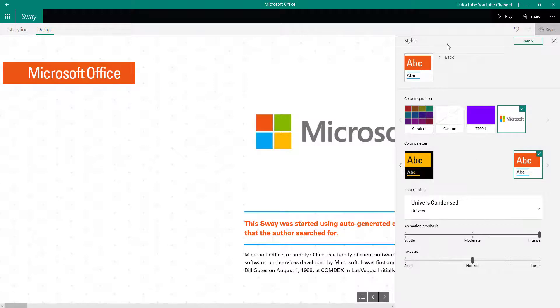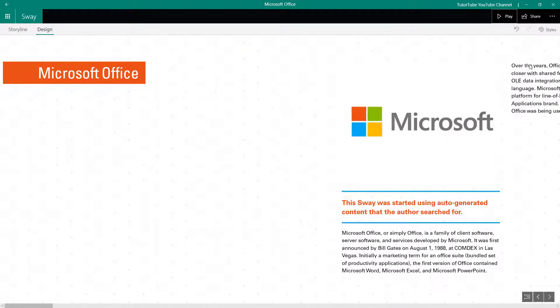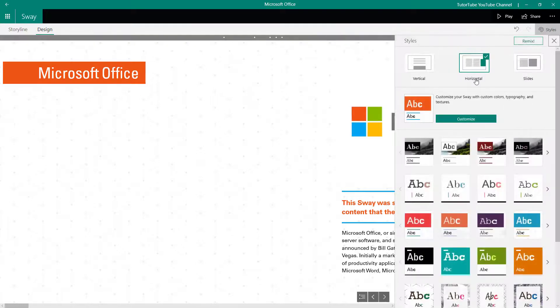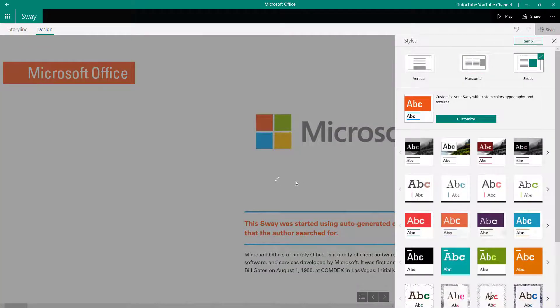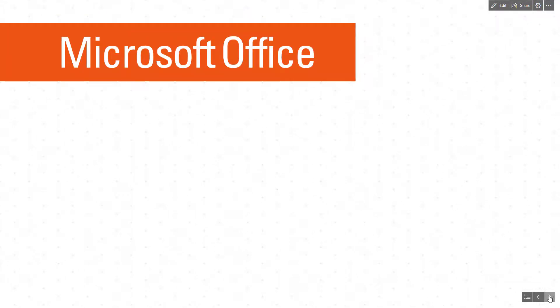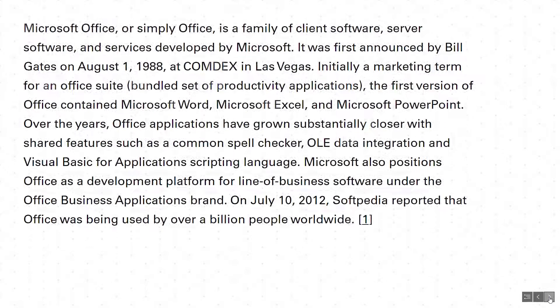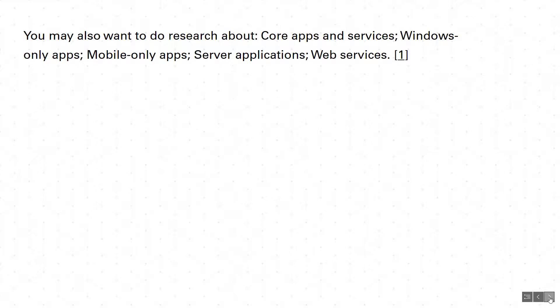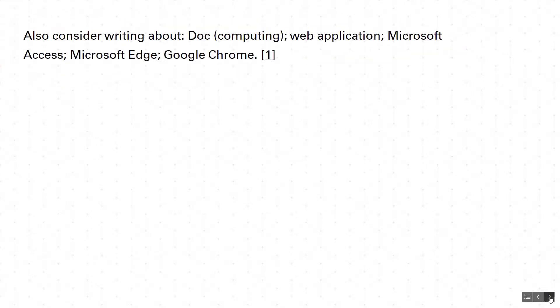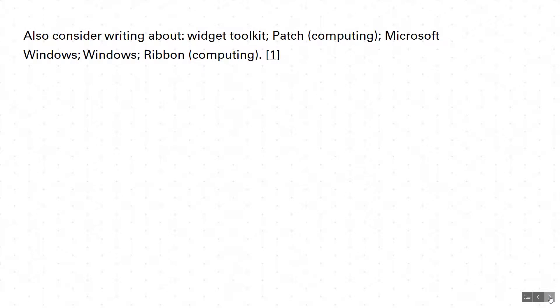With animation set to intense, I'll close this and go to slide mode. Pressing the play button on the first slide and pressing Next — intense animation plays out. Everything appears dynamically, and things look much more interactive once animation is added.